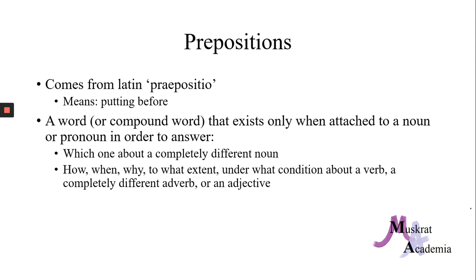Prepositions come from the Latin prepositio — another good opportunity to remind viewers that I do not know how to pronounce Latin. It means putting before. A preposition is a word or compound word that exists only when attached to a noun or pronoun in order to answer which one about a completely different noun, or how, when, why, to what extent, under what condition, about a verb, a completely different adverb, or an adjective. Which makes this whole preposition thing about as clear as mud.